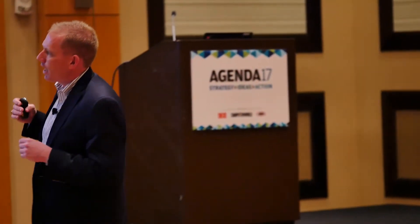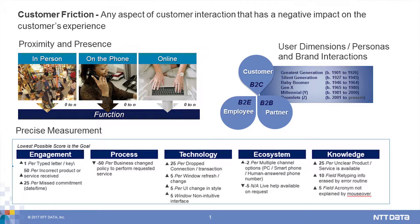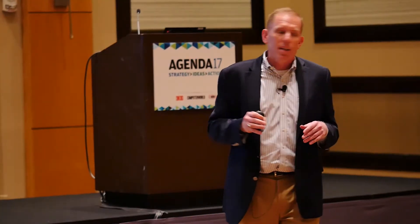The idea is we're going to measure and quantify this score across five different categories: engagement, process, technology, ecosystem, and knowledge. As an example, every letter you have to type is going to add a point, and anytime there's an incorrect product or service received, you're adding 50 points. We go across all these areas and come up with a quantifiable score.